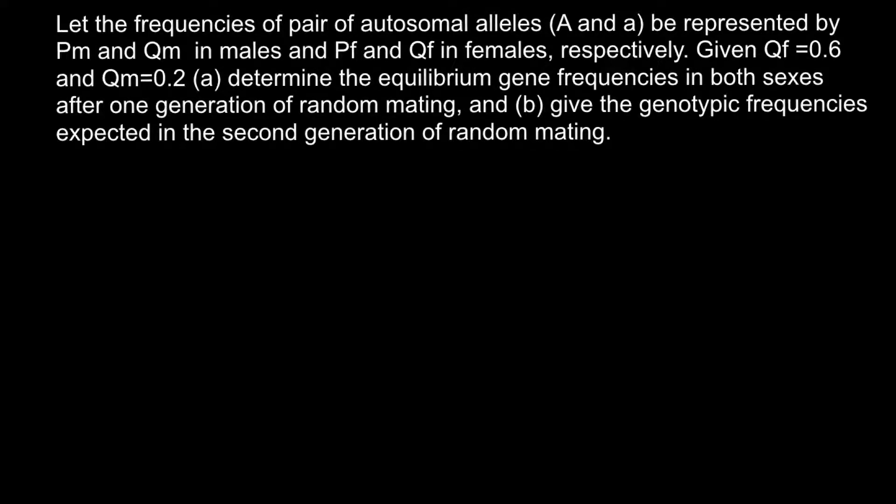Hello and welcome to Nikolai's genetics class. Today's problem comes from one of my subscribers from Kazakhstan. The problem: let the frequencies of a pair of autosomal alleles, dominant and recessive allele A, be represented by PM and QM in males and PF and QF in females respectively. Given that QF is 0.6 and QM is 0.2, determine: question A, the equilibrium gene frequencies in both sexes after one generation of random mating, and question B, the genotypic frequencies expected in the second generation of random mating.